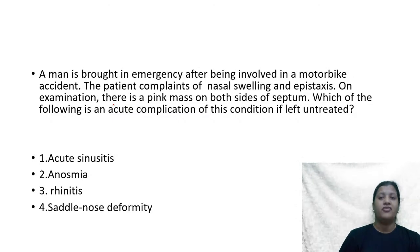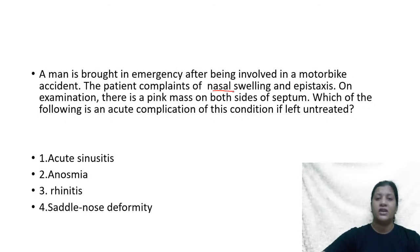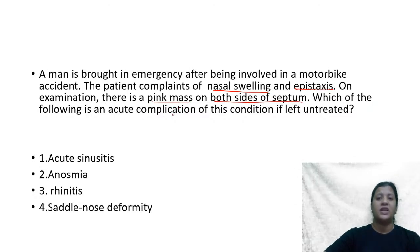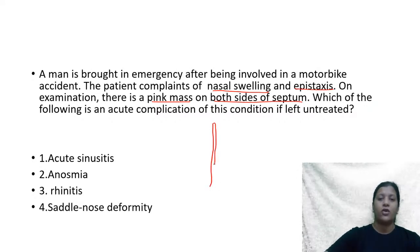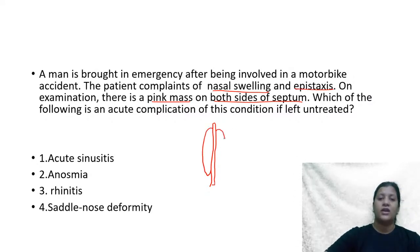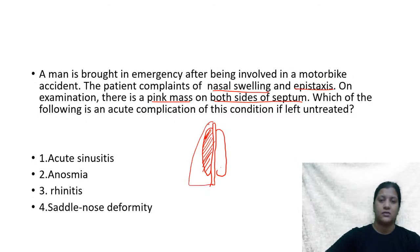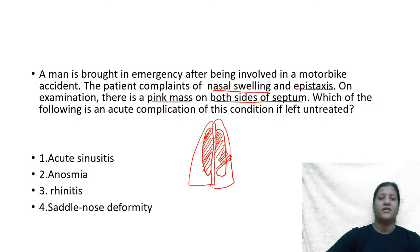Next question: a man is brought to the emergency after a motorbike accident. He complains of nasal swelling and epistaxis. On examination there is a pink mass on both sides of the septum. Which of the following is an acute complication of this condition if left untreated — (A) sinusitis, (B) anosmia, (C) rhinitis, or (D) saddle nose deformity?